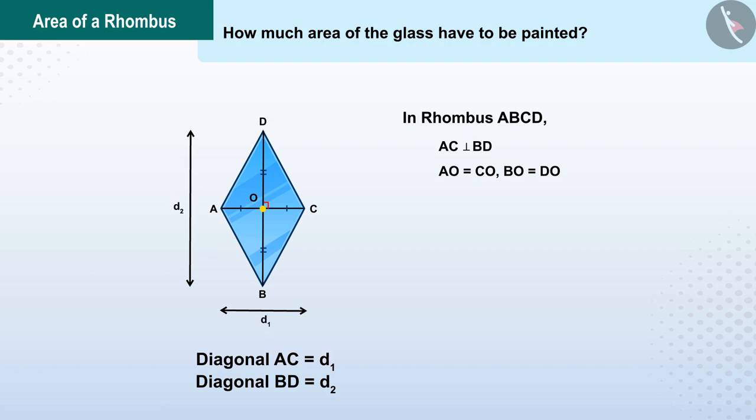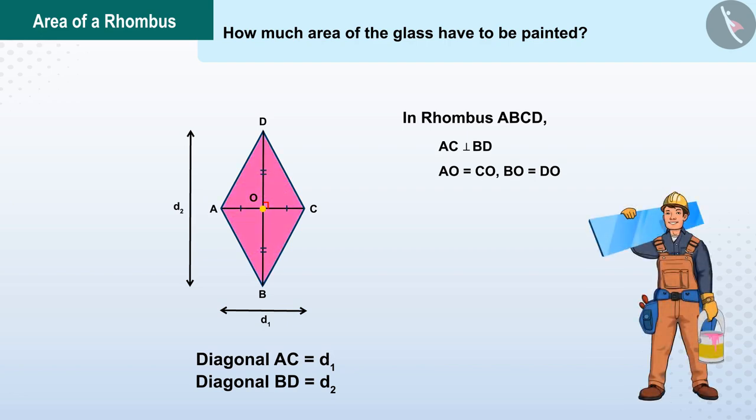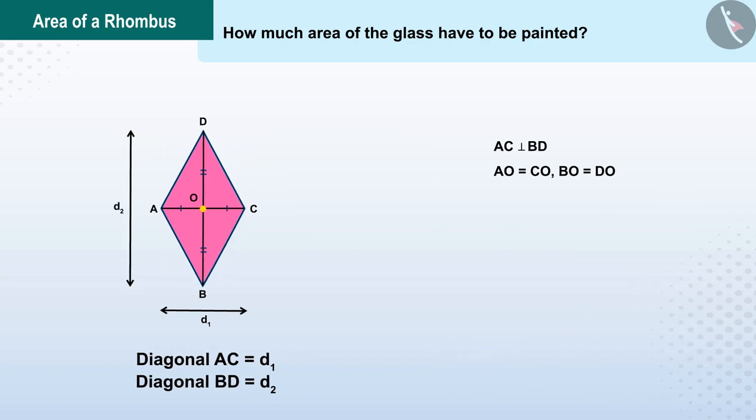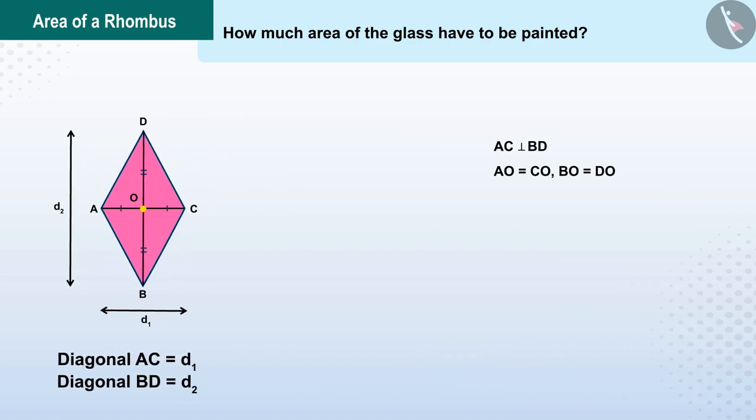In this case Kamlesh will paint on the same part of the glass as the area of the glass. But Kamlesh does not know the formula to find the area of the rhombus.